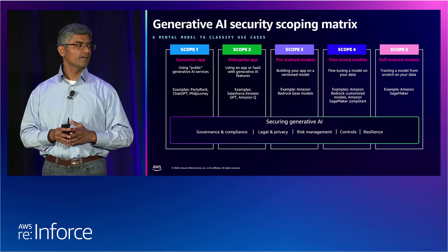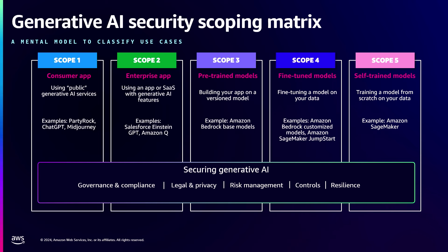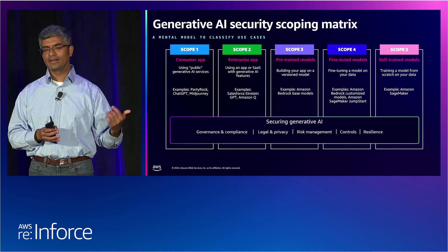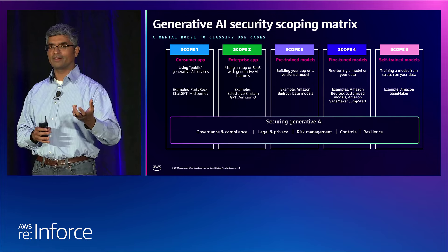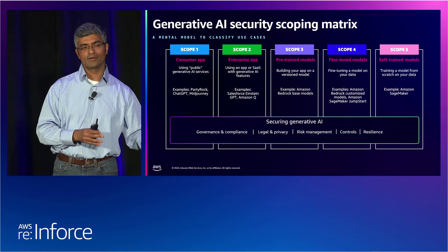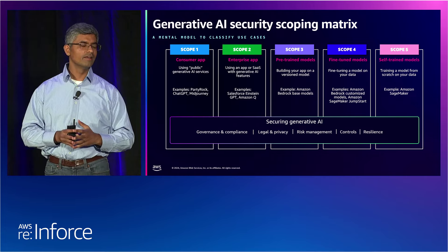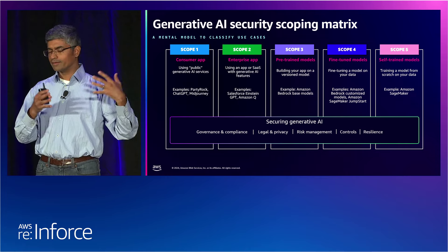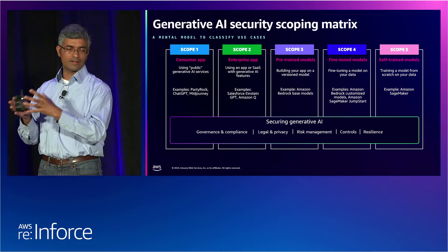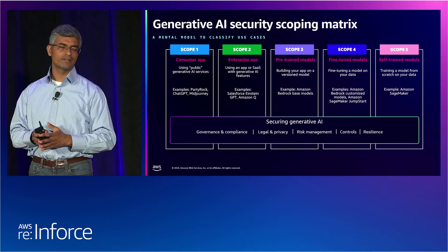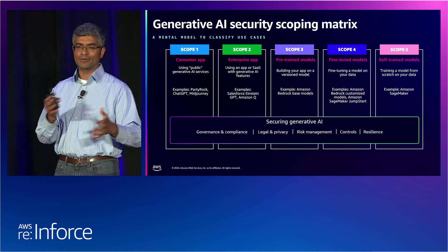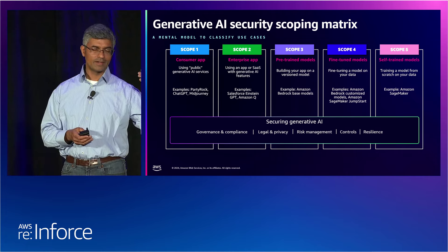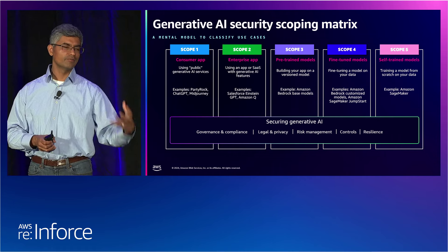When you step into scope four, called fine-tuned or customized models, you bring your own information to change or customize the model so it performs better at your task. Going back to the automotive example: an off-the-shelf model may not understand automotive-specific terminology. So you might customize the language model by exposing it to an automotive glossary and sample transcripts, giving it contextual knowledge it lacked. Bedrock is a service that lets you do that customization on certain models.